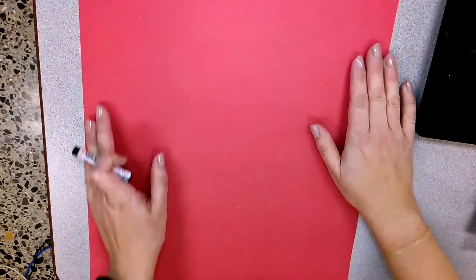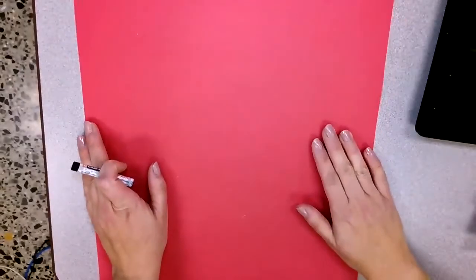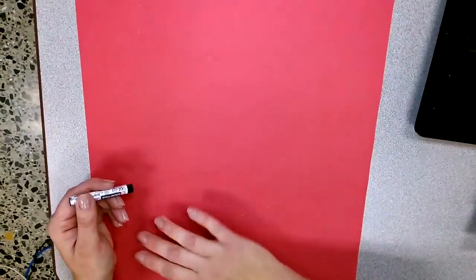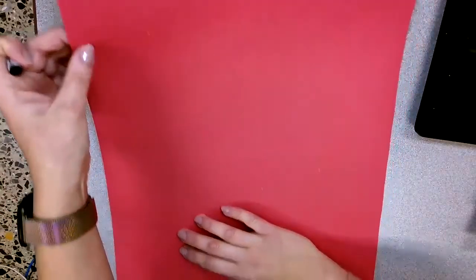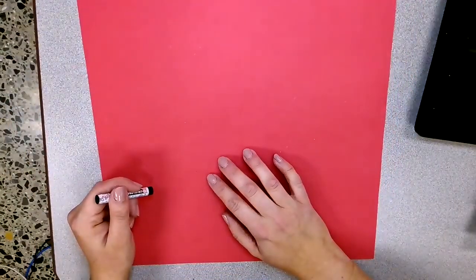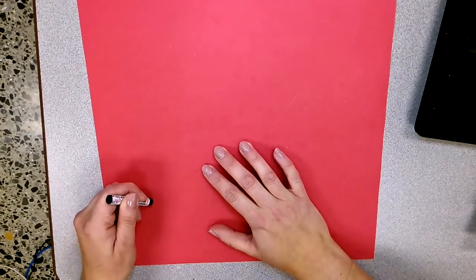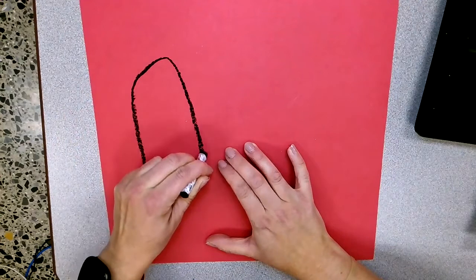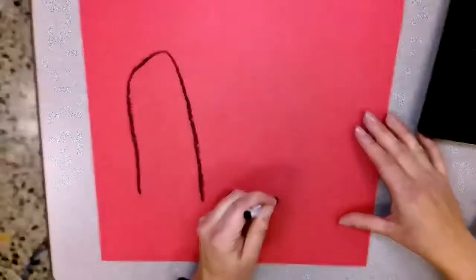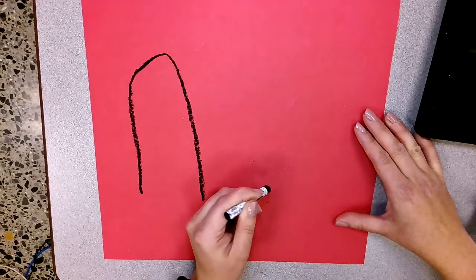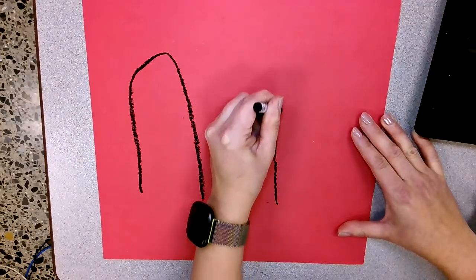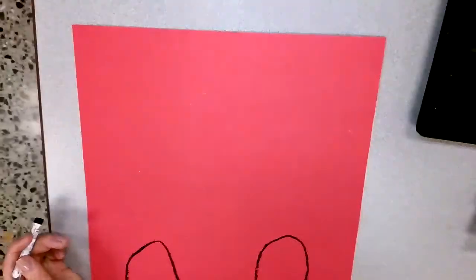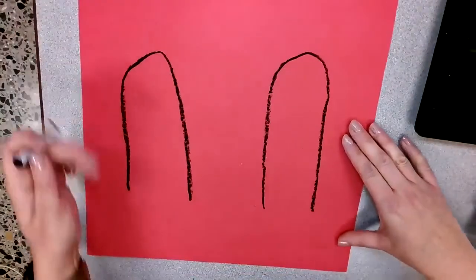Step one. You want to make sure that your paper is turned up and down tall vertically like this. Now, near the bottom, not at the very bottom edge, but near the bottom, you will be drawing two long upside down U shapes. Leave some space between them. The top of the letter U should be somewhere near the middle of the page going up. That's my entire sheet right there. Two letter U's.